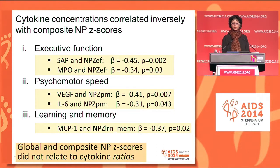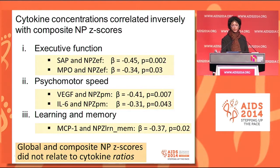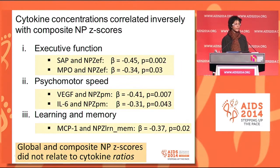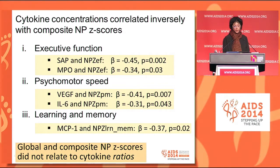Cytokine concentrations showed inverse correlations with composite NPZ scores for executive function, psychomotor speed, and learning and memory, and the relevant cytokines are shown here. In particular, learning and memory was negatively associated with MCP-1. The global and composite NPZ scores did not relate to cytokine ratios, however.